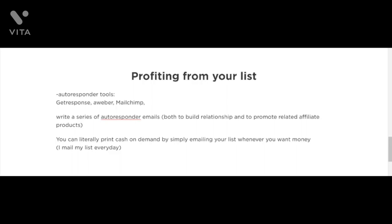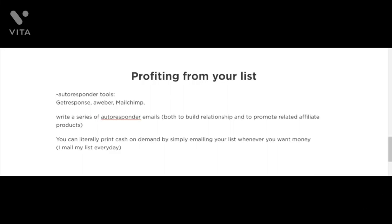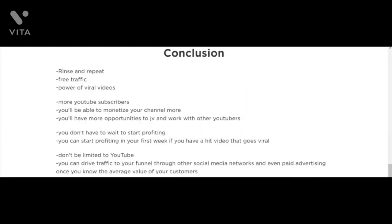Depending on how comfortable you feel, you could email your list every day, every other day, or twice a week — it's up to you. You can also write a series of autoresponder emails to build a relationship and promote related affiliate products. When someone opts into your list, they'll automatically receive these pre-written emails. You could write five, ten, or even thirty or more. You'll need an autoresponder tool such as GetResponse, AWeber, or MailChimp. I've been using GetResponse for several years and highly recommend it.